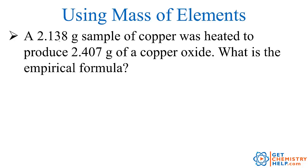Let's say we have a 2.138 gram sample of copper, and that was heated up to produce 2.407 grams of copper with oxygen — so some kind of copper oxide. What is the empirical formula? The empirical formula, remember, is the simplest mole-to-mole ratio of elements.